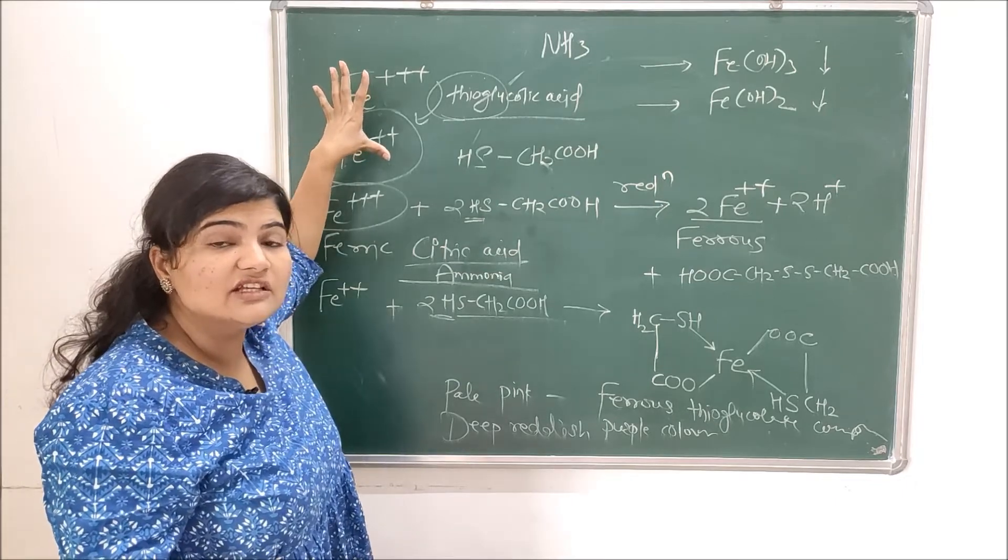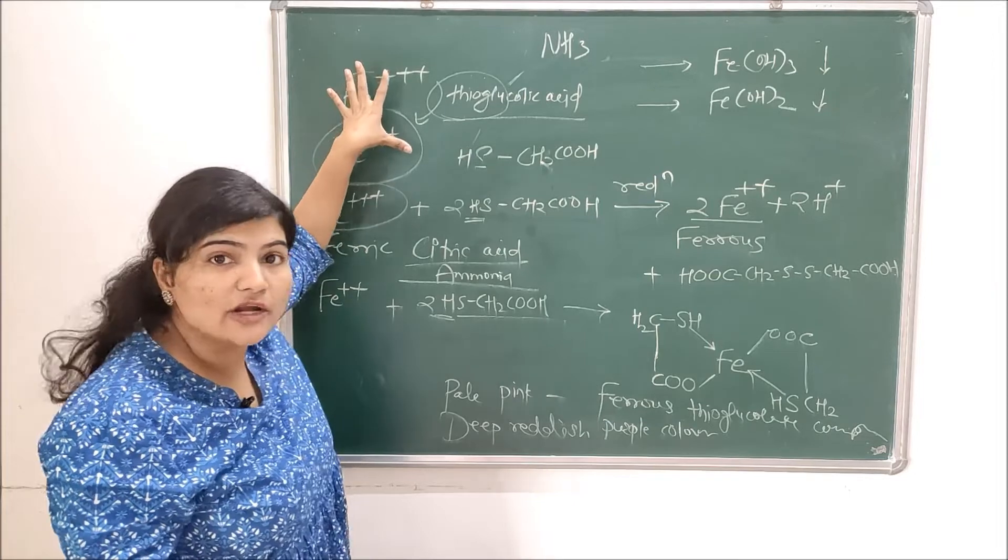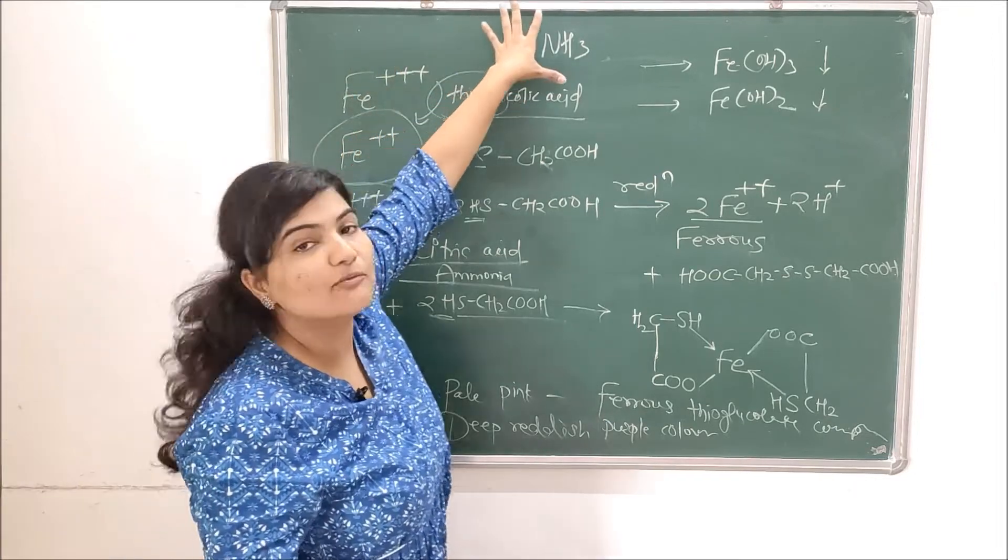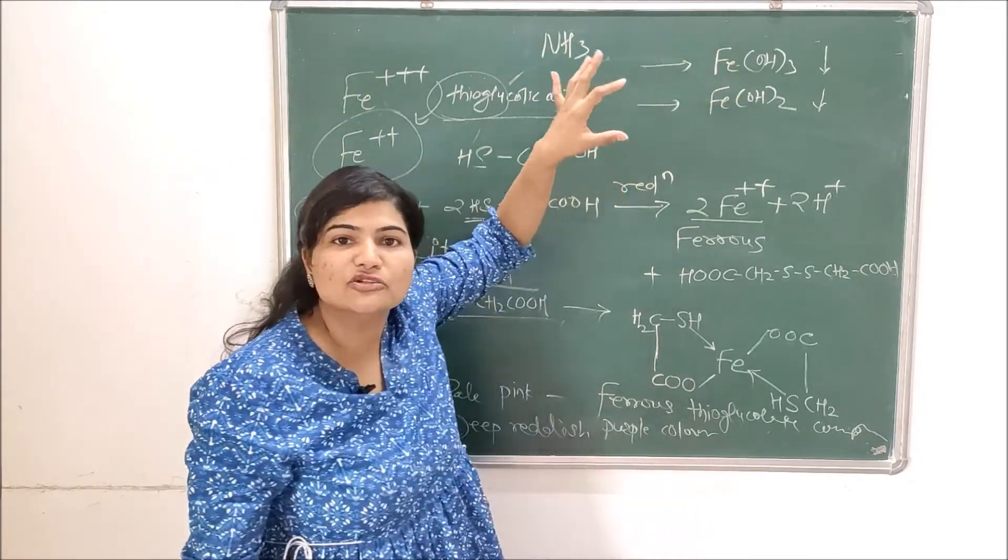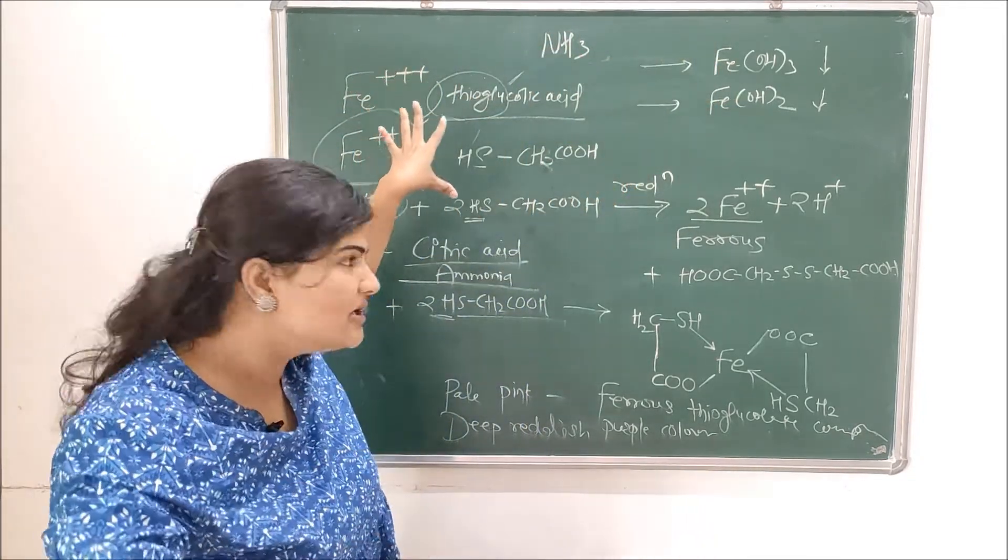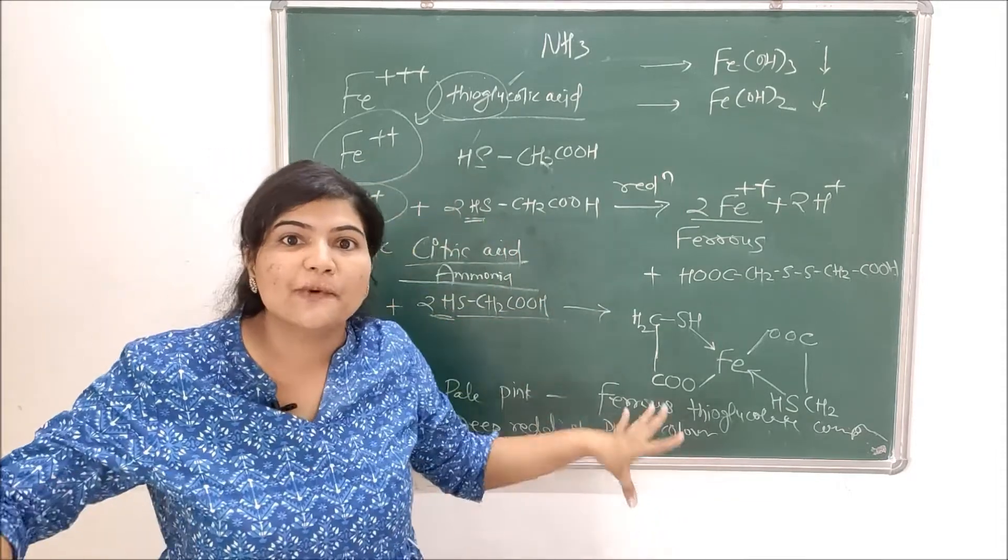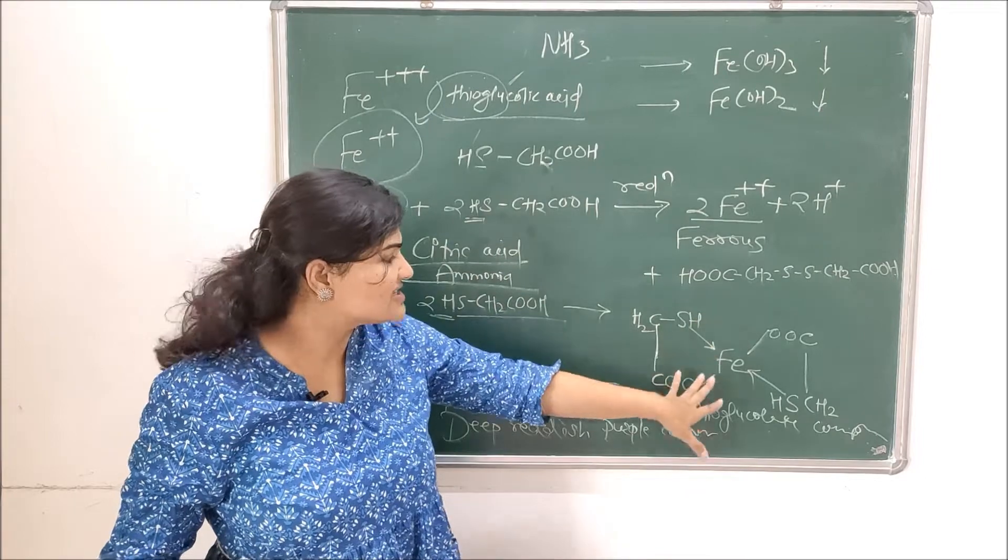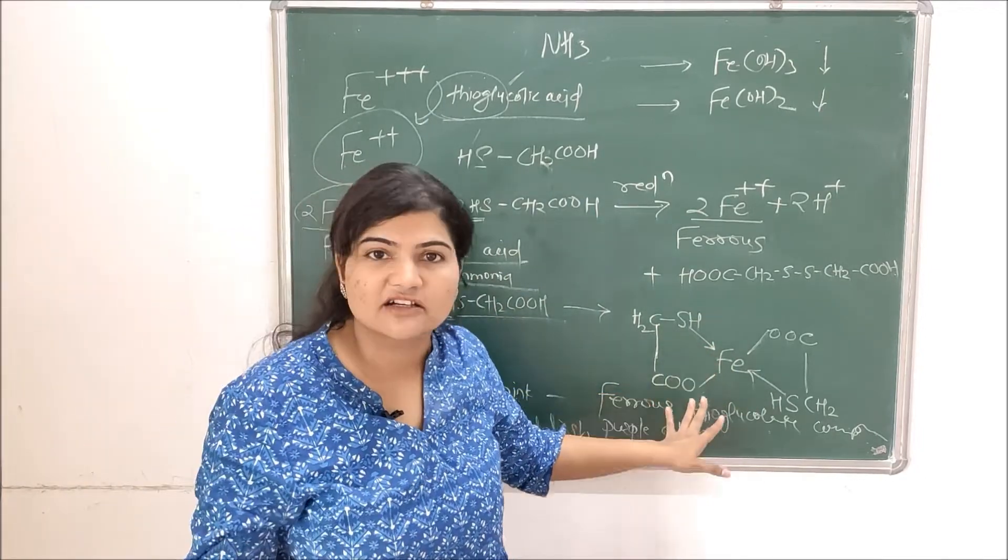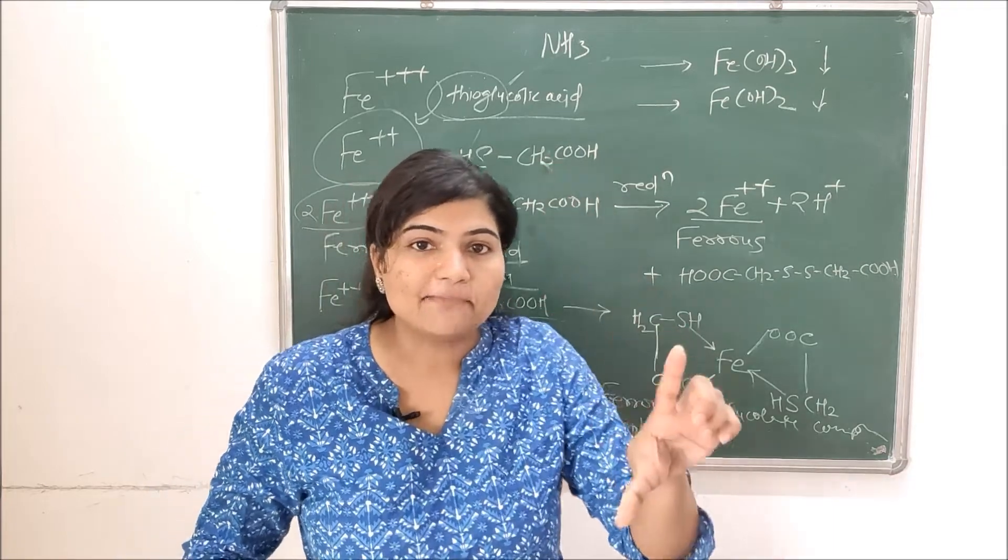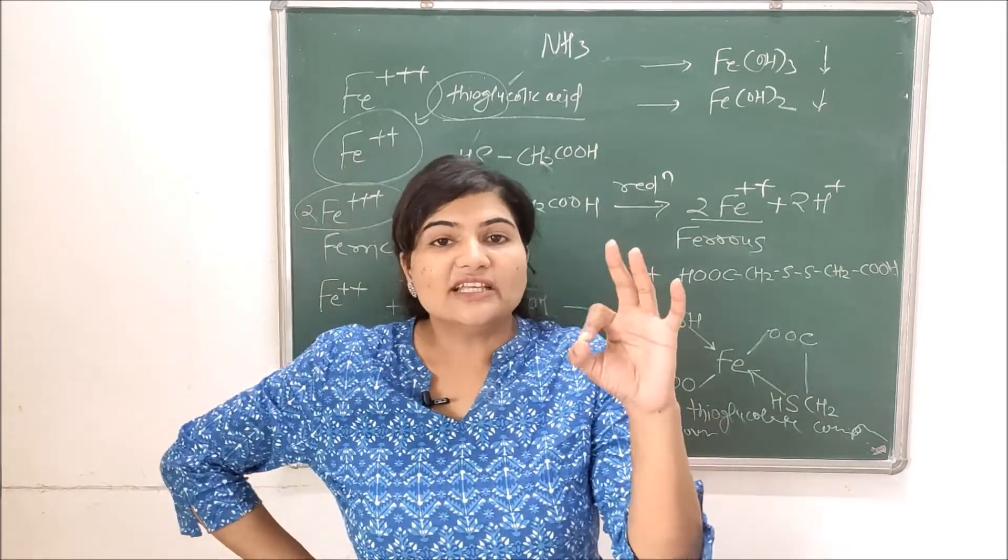Now when iron is in the form of a soluble complex, it is not available for reaction with ammonia. So ammonia now cannot form a precipitate with iron because iron is in a soluble complex with citric acid, and this way iron is spared to react with thioglycolic acid to form this complex which is going to give us the required color.